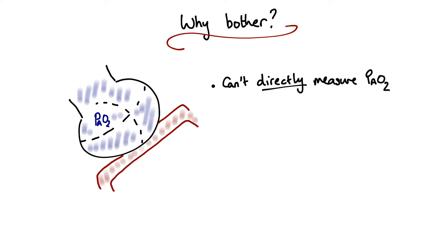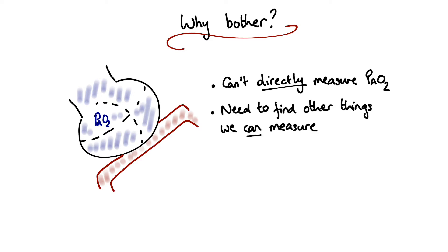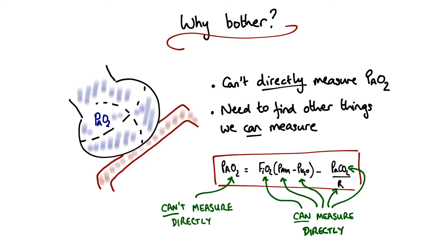So if we can't directly measure it, then we need to find some other stuff that we can directly measure. The reason that the derivation of the alveolar gas equation is quite convoluted is simply because we need to find some other variables that we can measure. The derivation in itself is not something that's particularly elegant, but it ends up with a situation where we've got a number that we want to know but we can't measure, determined by a series of other parameters which we can directly measure.